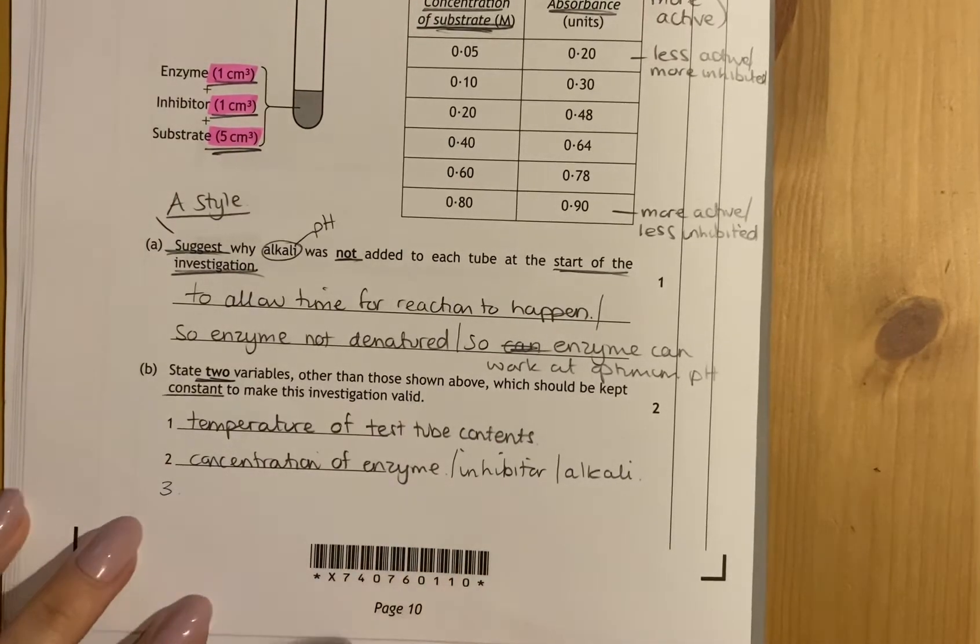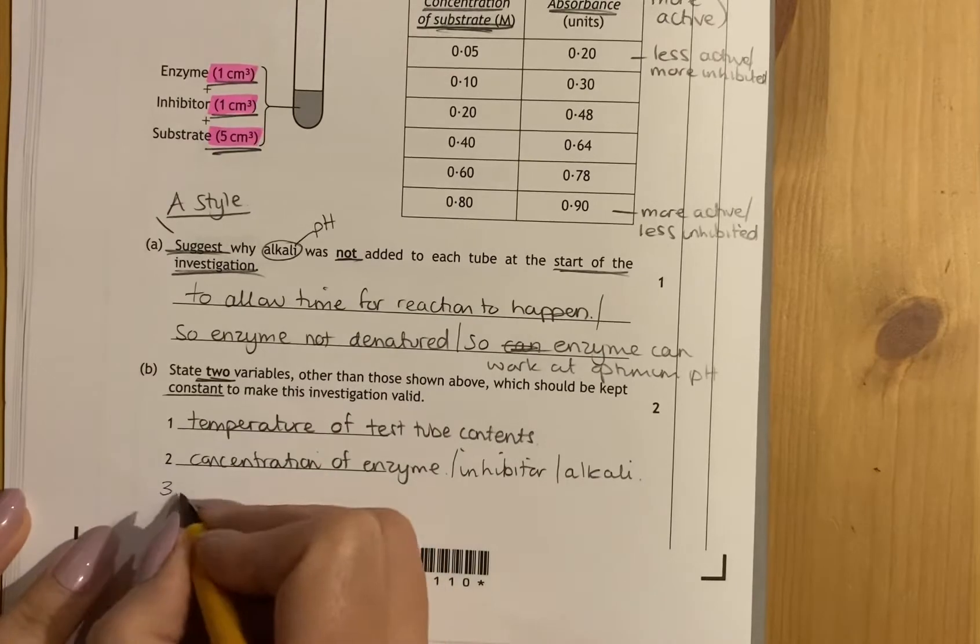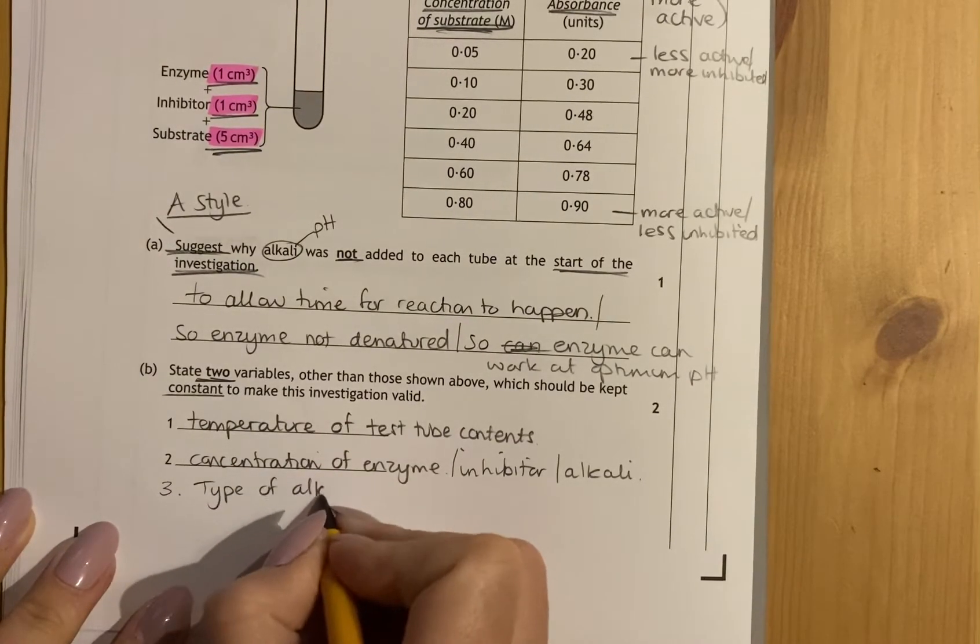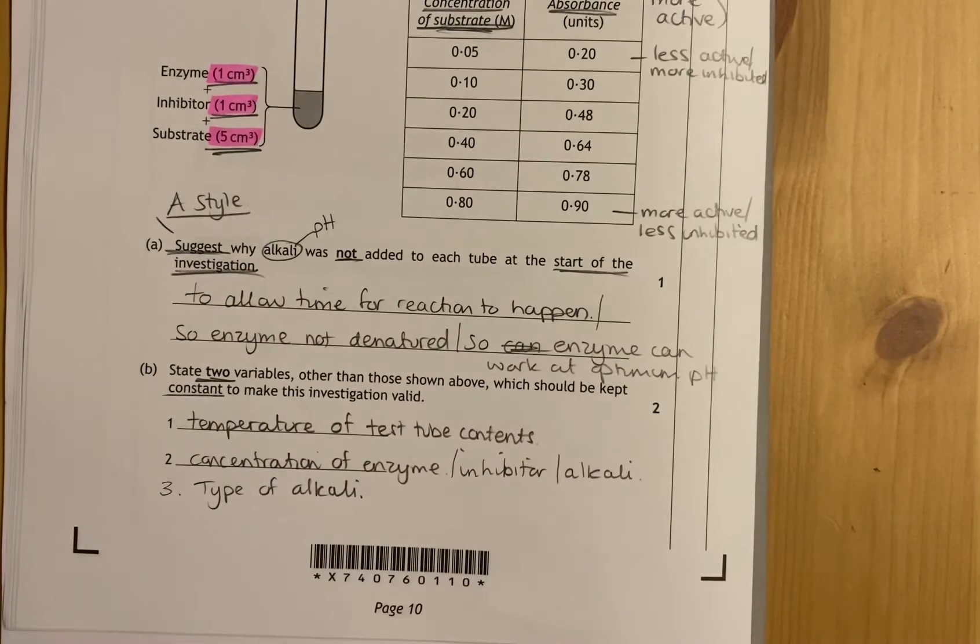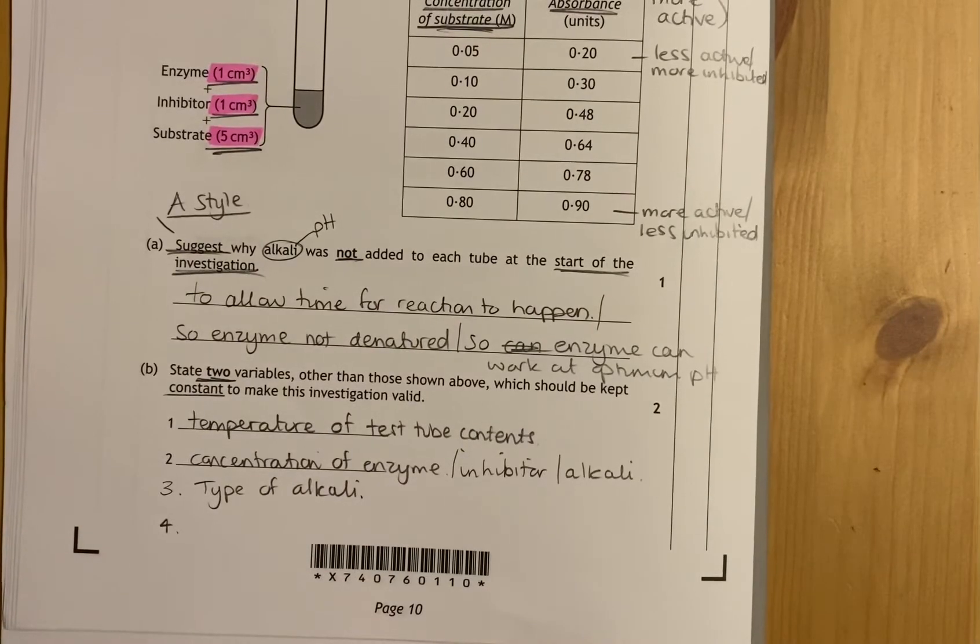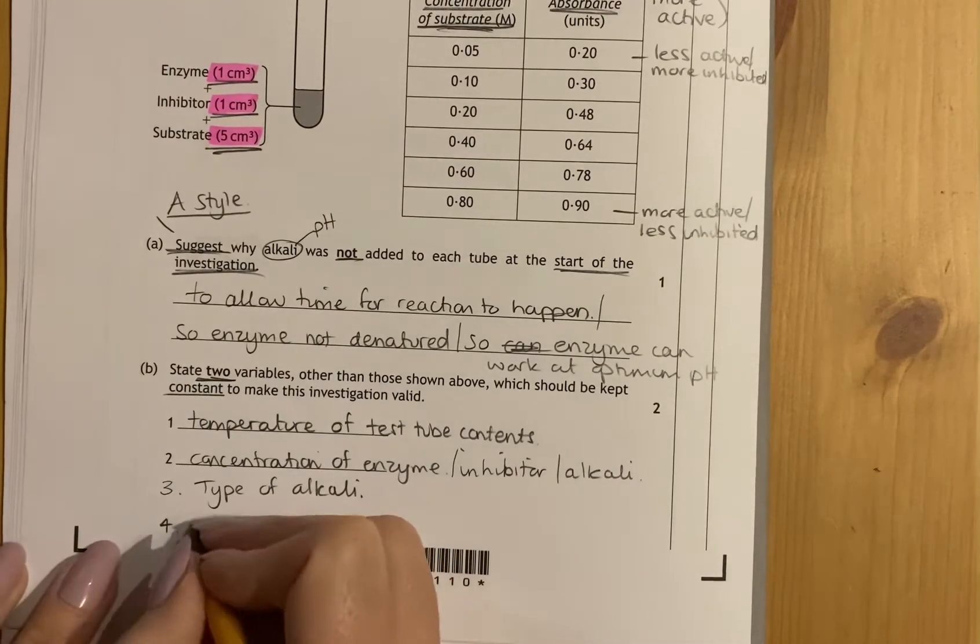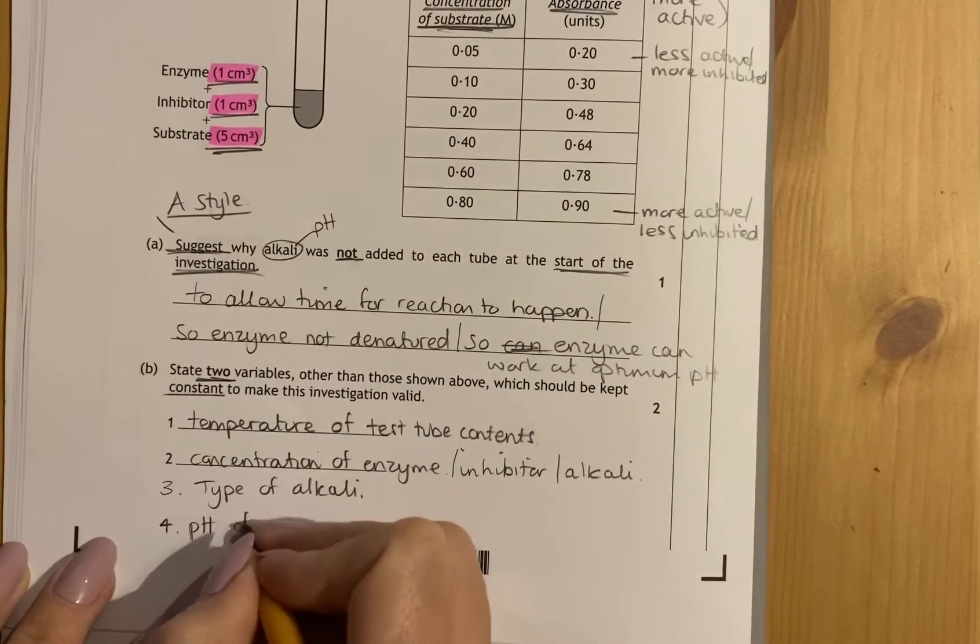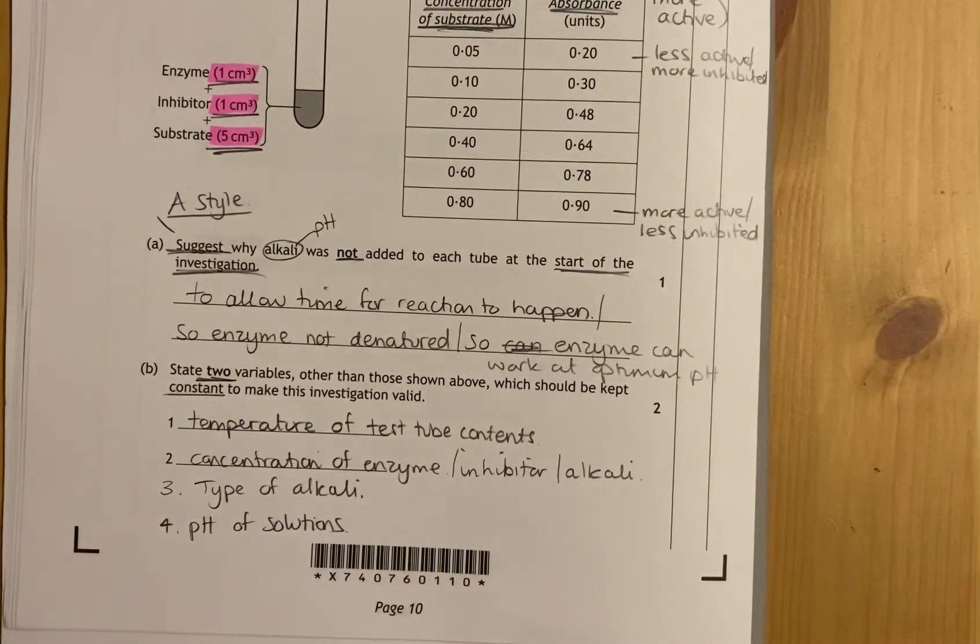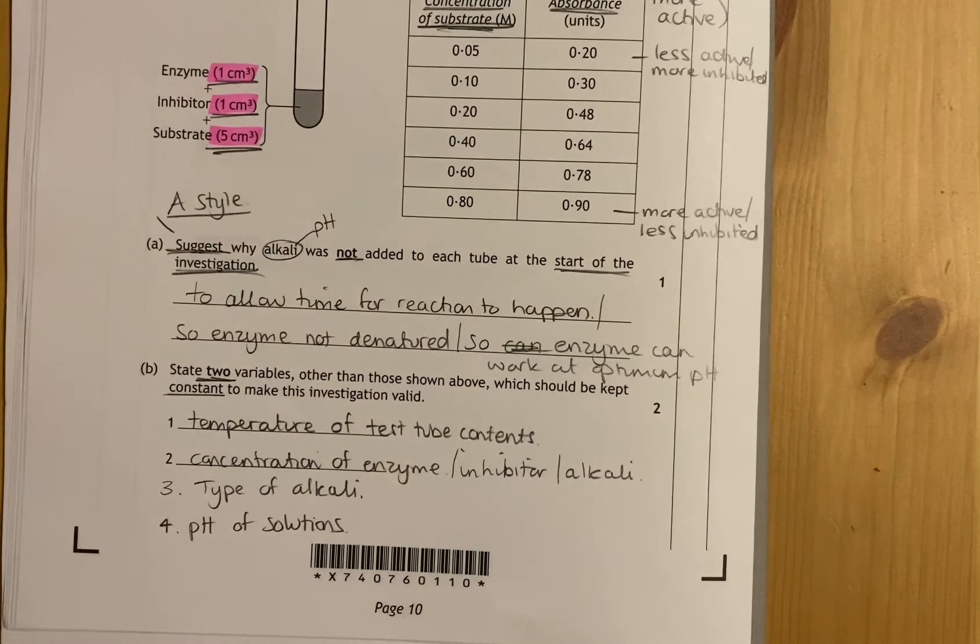They've just said alkali, they've not told you which type of alkali that is, so if you say type of alkali that would also be acceptable because you need to keep that the same in every experiment. And then the last point could be that they're adding alkali but they've not stated that they've kept the pHs the same to begin with. So the pHs of the solutions must be kept the same so they're not affected at the beginning. There's a whole range of things that you can talk about in this experiment.